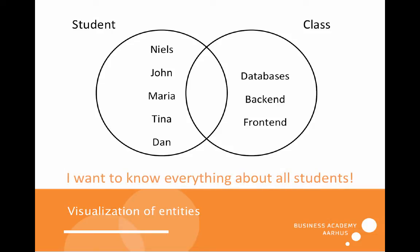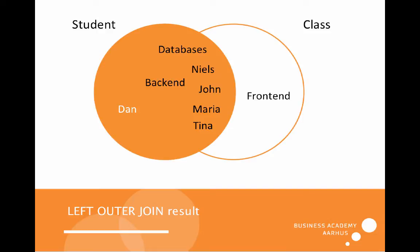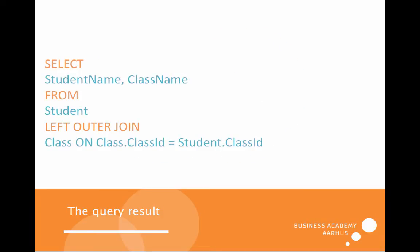I want to know everything about all students — that means I want to know if they are in a class and which class they are in. If I use the left outer join, I get everything on the left side. That means I get databases and backend, because there are some students in these two classes. The frontend on the right side has no students enrolled. Dan is kind of outside because he is not in a class, but he is still on the left side because he is part of students.